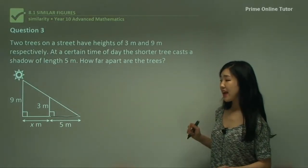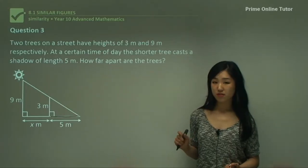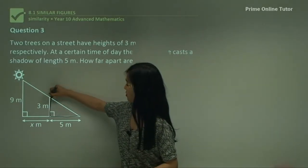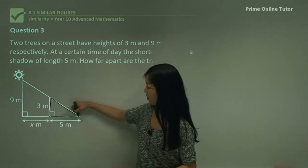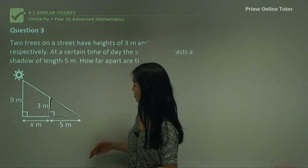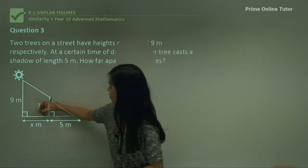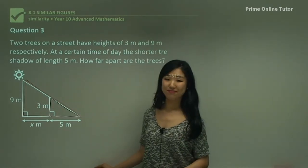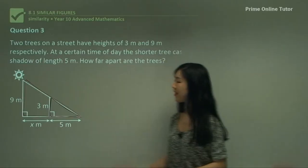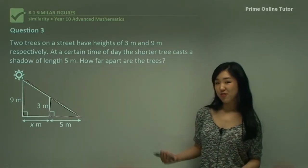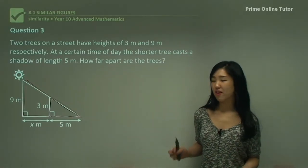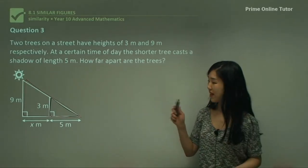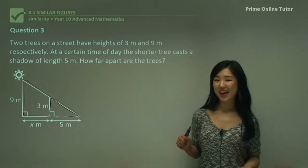I hope you can see the similar triangles here. This is the first smaller similar triangle, and the larger triangle is this one here. I'm not going to go through the reasoning again — it's the exact same reasoning as questions one and two. All angles are the same.